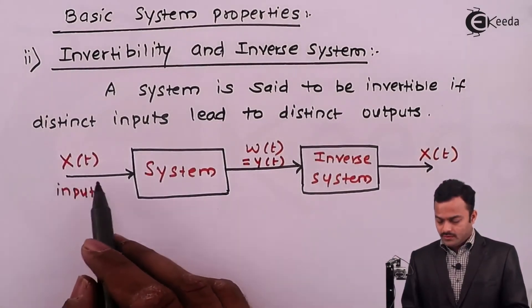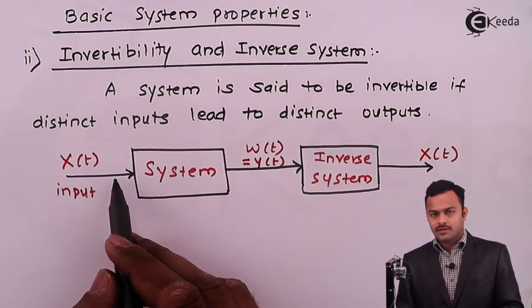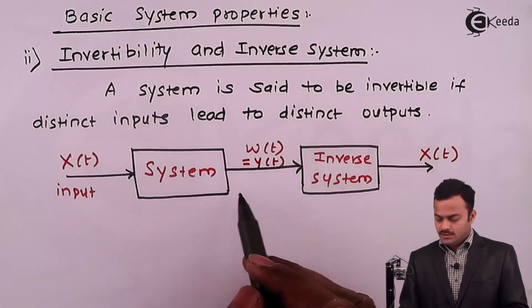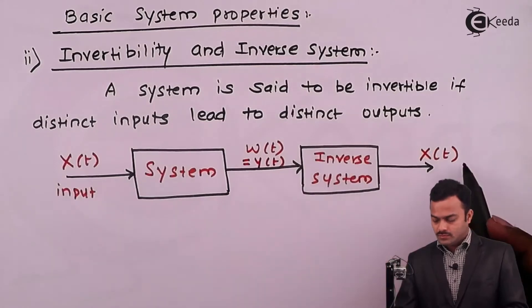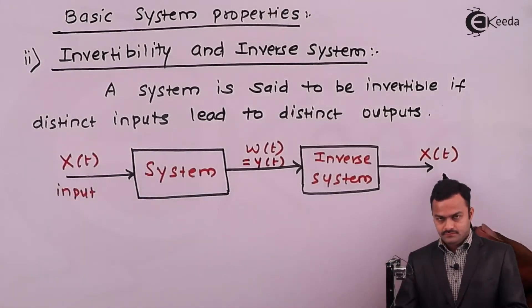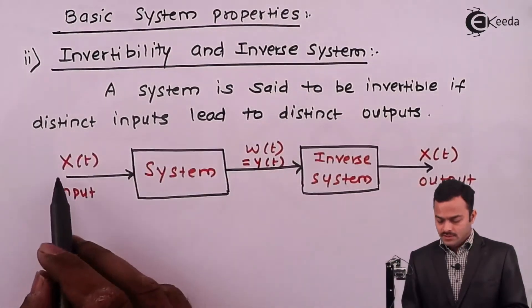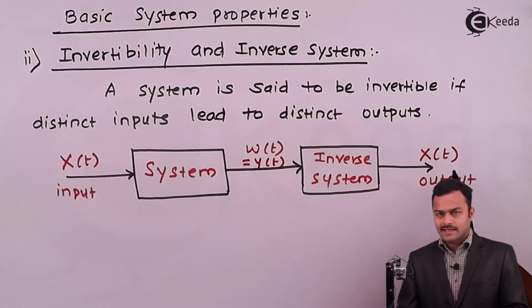So what is happening? For one kind of input x of t, I pass through a system, I got some intermediate output that should be passed through an inverse system to get the signal itself. So this will be the output, nothing but the input. So I can say after passing through this system, original input is gathered.